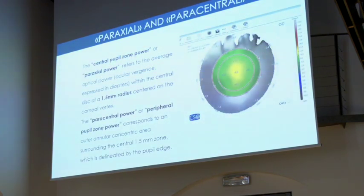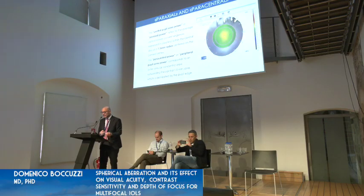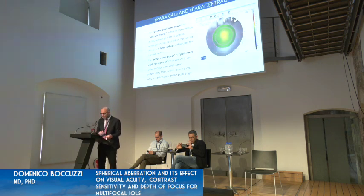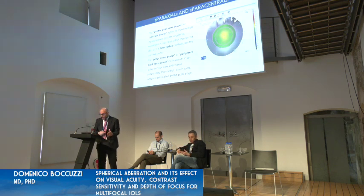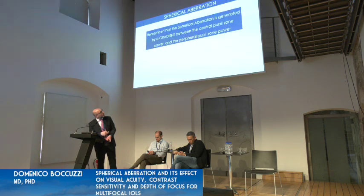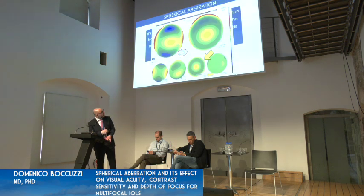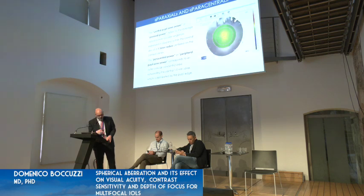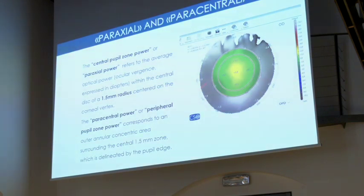The central pupil zone power refers to the optical zone within a 1.5 mm radius centered on the corneal vertex. The paracentral power refers to the annular concentric surrounding area outside this 1.5 mm zone. Understanding this distinction is essential when discussing how spherical aberration affects paraxial versus peripheral rays.